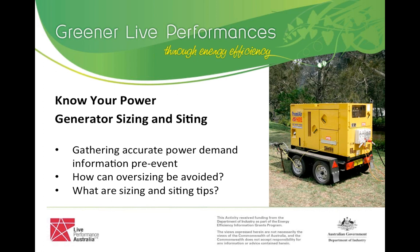So for an efficient event, you want to have smaller power demand where possible. But if you've got a hundred food stalls all needing bain-maries, that's a given. Where you then sit with your efficiency is to ensure you're using the right size generator and that it's being used at the optimal load — around 70 to 80 percent — as much as possible.